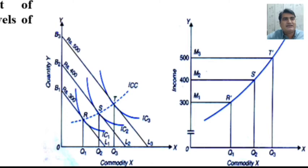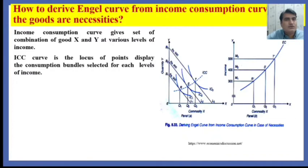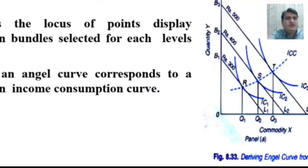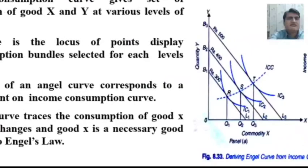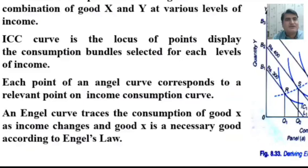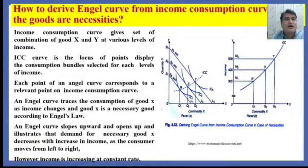Every point on R dash, S dash, and T dash is in line with the RST points on the Income Consumption Curve. The Income Consumption Curve is the locus of points displaying the consumption bundles selected for each level of income, and each point on an Engel Curve corresponds to a relevant point on the Income Consumption Curve. An Engel Curve expresses the consumption of Good X as income changes. Good X is a necessary good according to Engel's Law, because the Engel Curve slopes upward and opens up, illustrating that demand for necessary Good X increases with income but at a decreasing rate as the consumer moves from left to right.